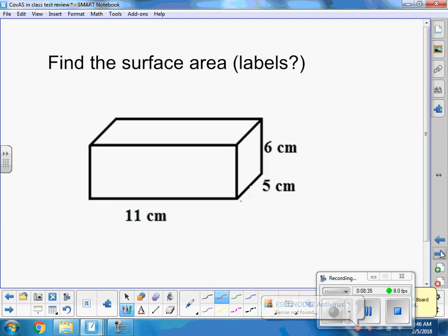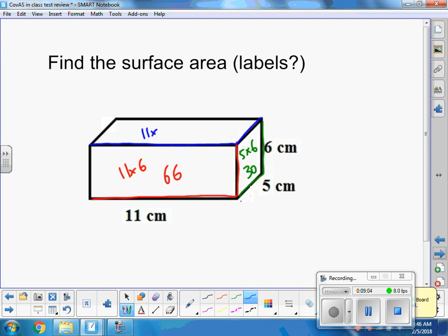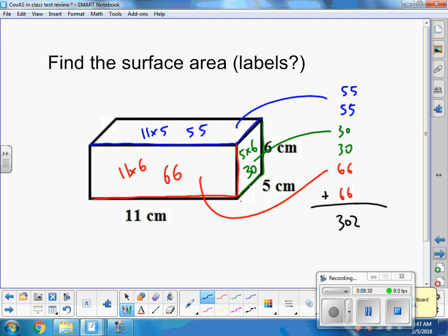You try this guy. Press pause. This one is 11 by 6, so 66. This one is 5 by 6, which is 30. And this one is 11 by 5, which is 55. So I know there's a top and a bottom, two sides, and a front and a back. If I add all those up I get 302 centimeters squared.